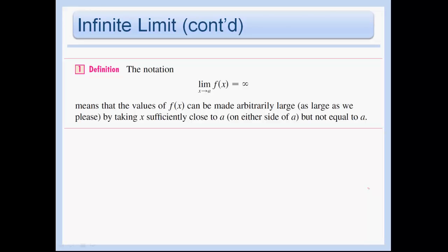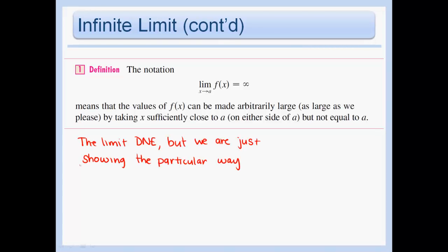Here is our definition and notation. The limit does not exist, but by saying that the limit as x approaches a of f(x) equals infinity, we're showing the particular way the limit does not exist — it's just explaining it in more detail. So you can say it does not exist or equals infinity; they're saying the same thing.